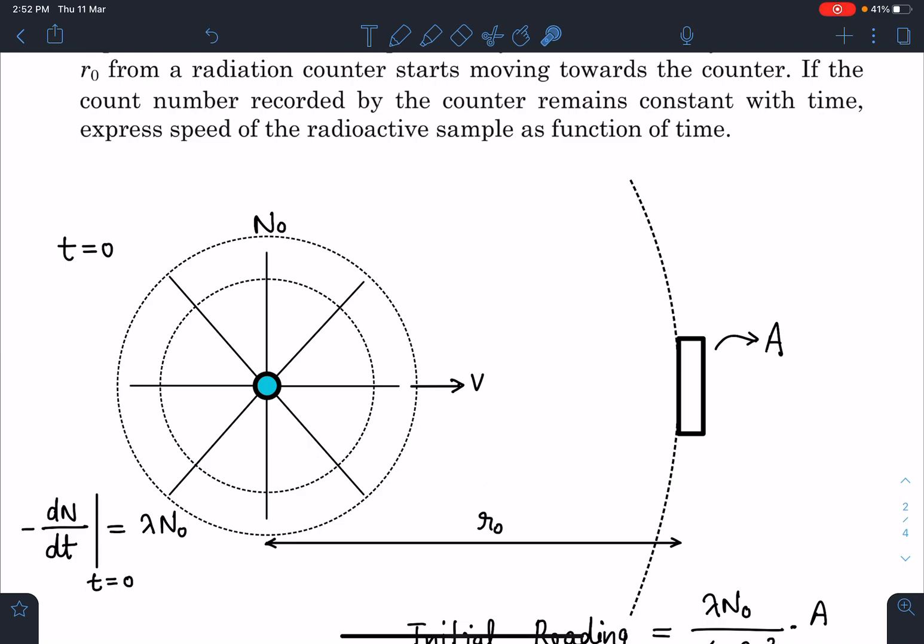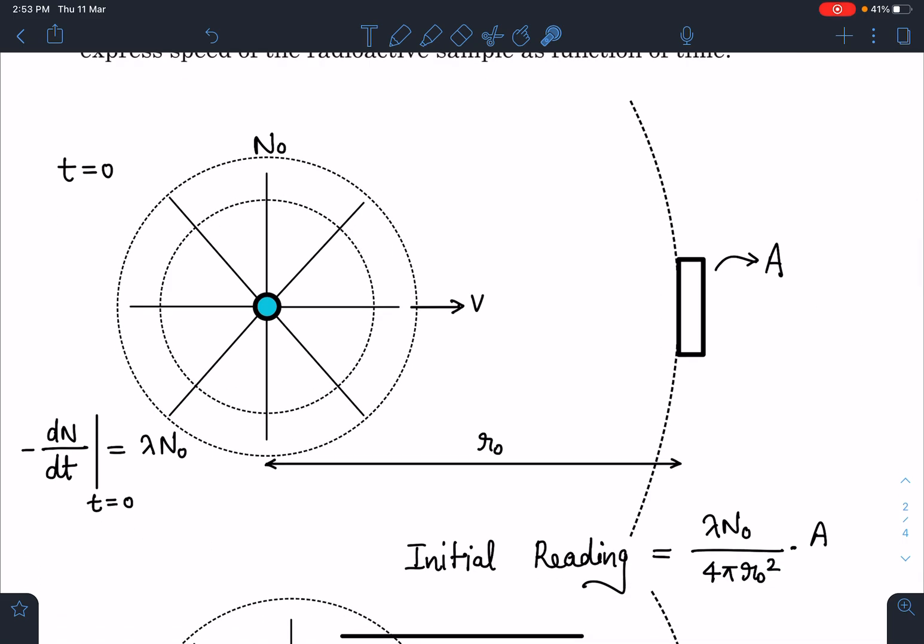Per unit at a distance of R these wavefronts you can say these wavefronts will be spherical. At a distance of R from the source this number will be lambda N naught because it is going to be same everywhere. It is going to be same in every sphere. So here I can write this number is going to be lambda N naught by 4 pi R square for a sphere of radius R.